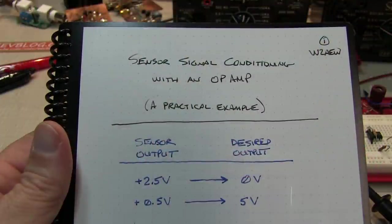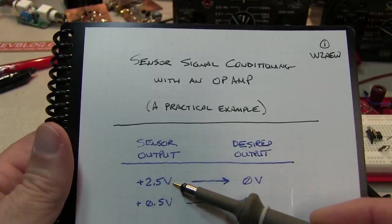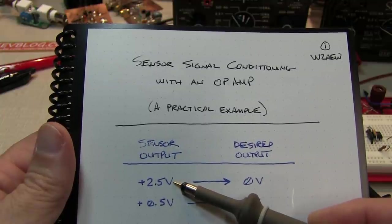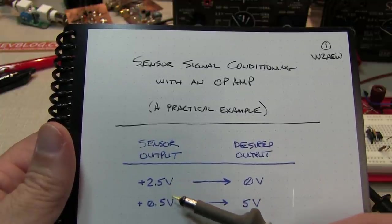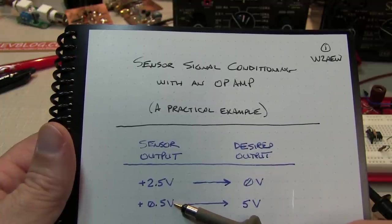A friend of mine was working on a design recently using an RF power sensor. That power sensor gave him a 2.5 volt output when the minimum input power was applied to the sensor, and gave an output of 0.5 volts when the maximum input power was applied to the sensor.